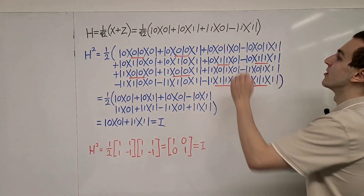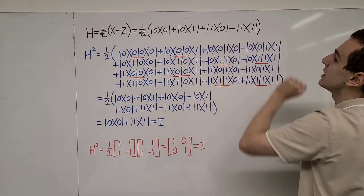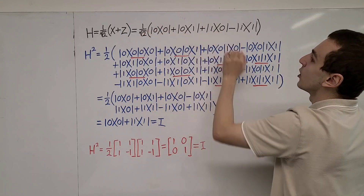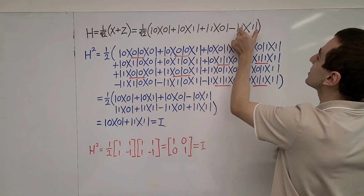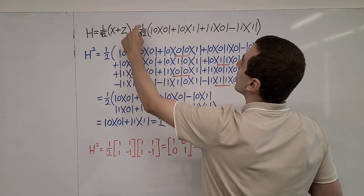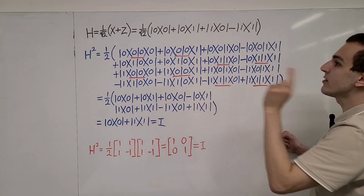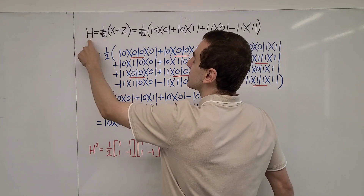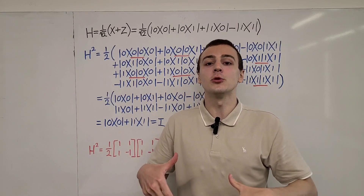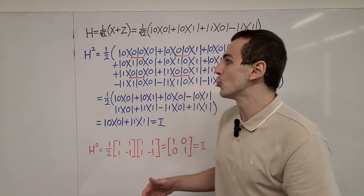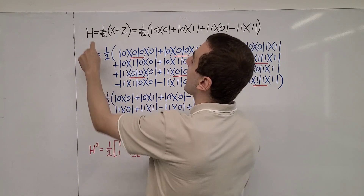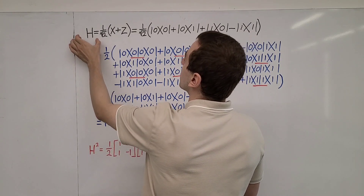Let's examine this definition. We have a definition in terms of ket-bra combinations. There are four terms: the first three terms all have a coefficient of plus one and the last term has a coefficient of minus one. There is also a factor out the front of one over square root of two. One important thing to remember is that H in this context is the Hadamard gate, but in other contexts it could also mean the Hamiltonian or it could denote a Hilbert space. So here we are talking about the Hadamard gate.